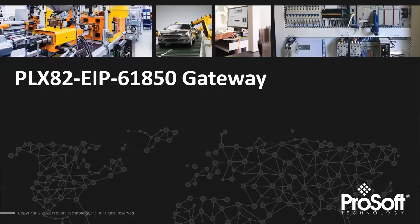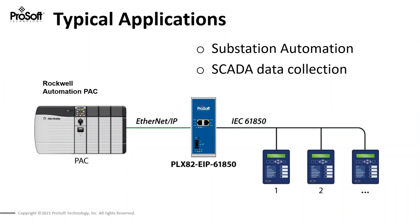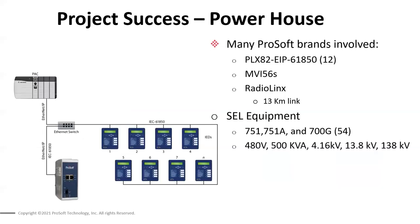One of our products that has been able to take advantage of IEC 61850 features is our PLX82-EIP-61850 gateway. It's a standalone gateway module that communicates with protective relays out on the network, brings that information back in, and passes it over to ControlLogix. This product was released in 2014, so we've had it out for about seven years now, with thousands of successful installations worldwide, and customers have seen some significant benefits from it.